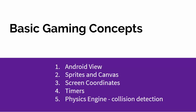We're going to learn how to use an Android view and how to manipulate a canvas. We're going to learn how sprites work and can be moved independently. We're going to learn how screen coordinates differ in an Android system versus what you've learned in math class. We're going to use timers and introduce the concept of a physics engine to detect when we're touching a sprite.